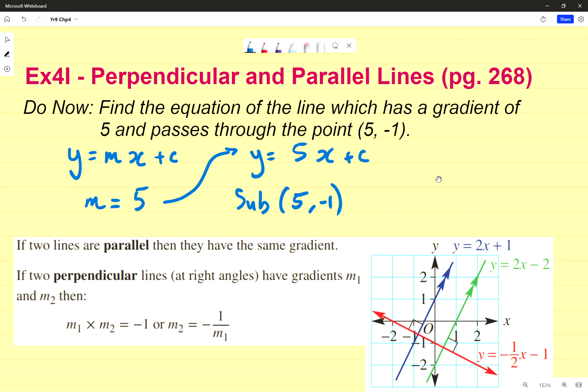The front do now question is from exercise 4g. It's find the equation of the line which has a gradient of 5 and passes through the point (5, -1). It's already given us a bit of information that we can easily put into the equation. Remember that y equals mx plus c, that's always going to be really important for this chapter.